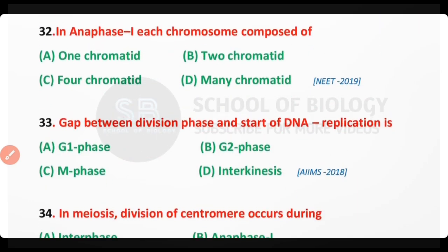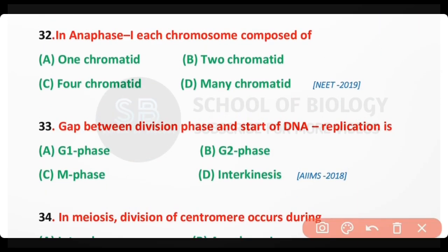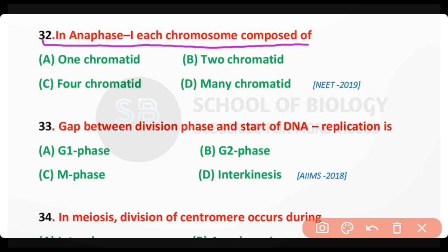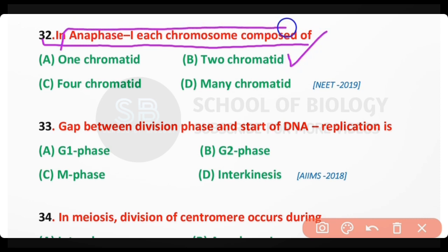Question number 32. In anaphase I, each chromosome is composed of how many chromatids? Options: one chromatid; two chromatids; four chromatids; many chromatids. The correct answer is option B. At anaphase I, each chromosome is composed of two chromatids.